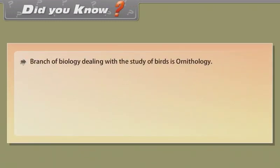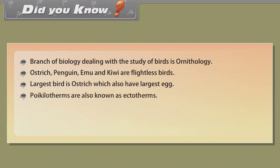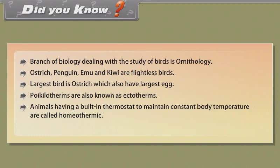Did you know? The branch of biology dealing with the study of birds is Ornithology. Ostrich, penguin, emu and kiwi are flightless birds. The largest bird is ostrich, which also has the largest egg. Poikilotherms are also known as ectotherms. Animals having a built-in thermostat to maintain constant body temperature are called homeothermic. The fish which eradicates mosquito larvae is Gambusia.